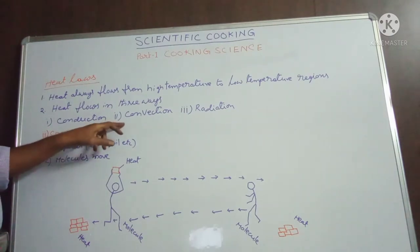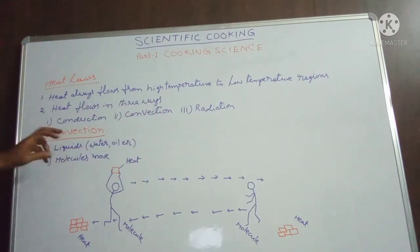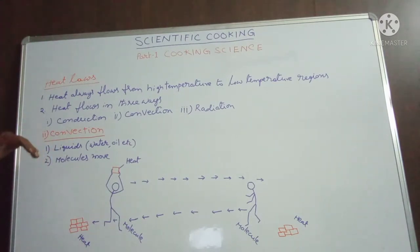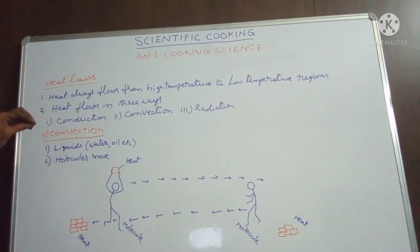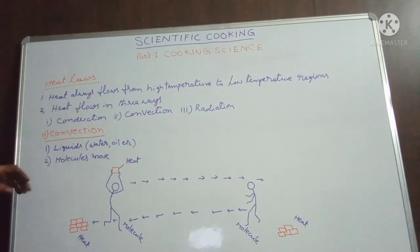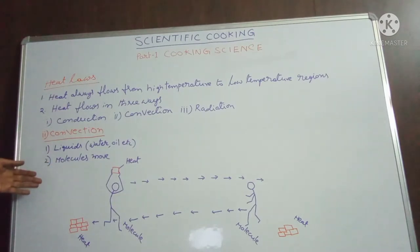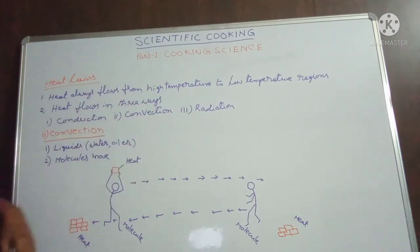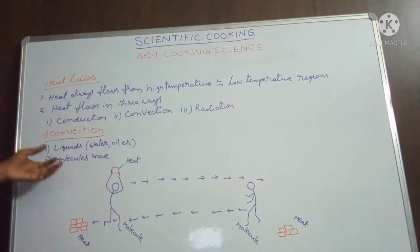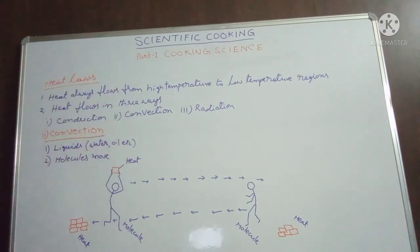Let us see another transmission of heat — that is convection. Convection takes place in liquids; heat transmits in liquids in the process of convection. In this convection process, molecules move from one place to another place. These molecules carry heat and move from one place to another place.